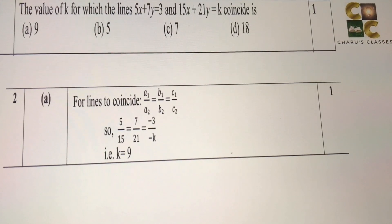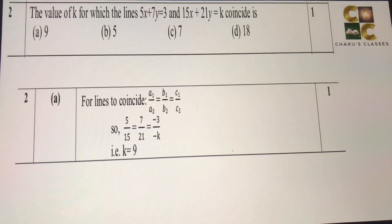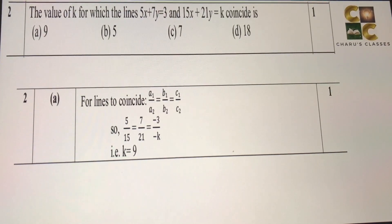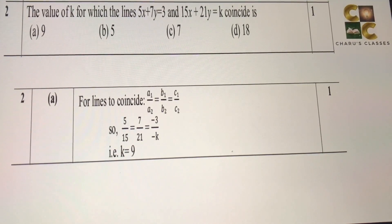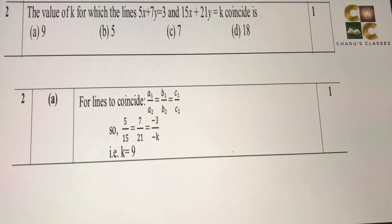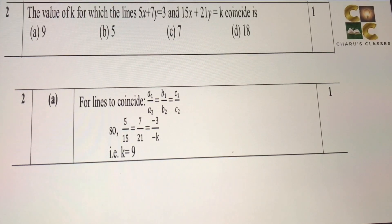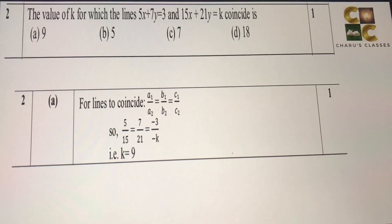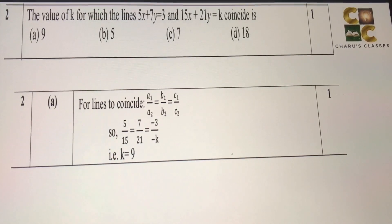Question number 2: the value of K for which the lines 5x + 7y = 3 and 15x + 21y = K coincide. Two lines, as you know, if they coincide, that means A1/A2, the ratio of their x coefficients should be equal to the ratio of their y coefficients should be equal to their constant terms. Solving this, we are getting K is equal to 9.